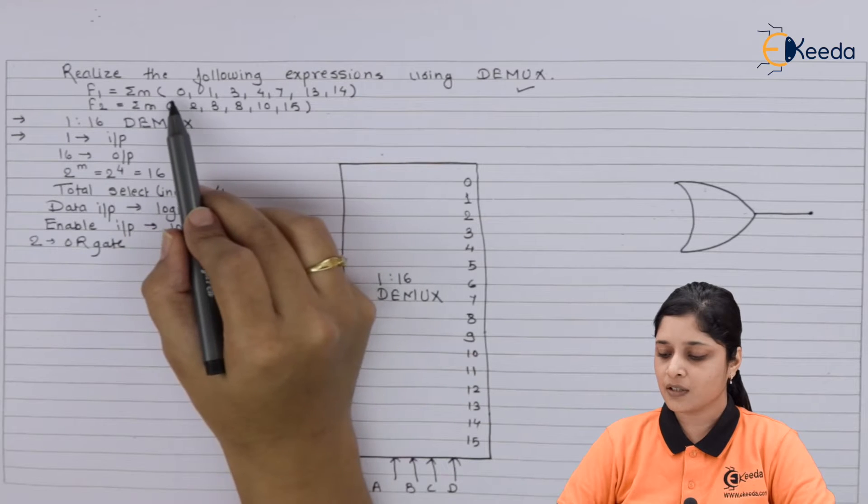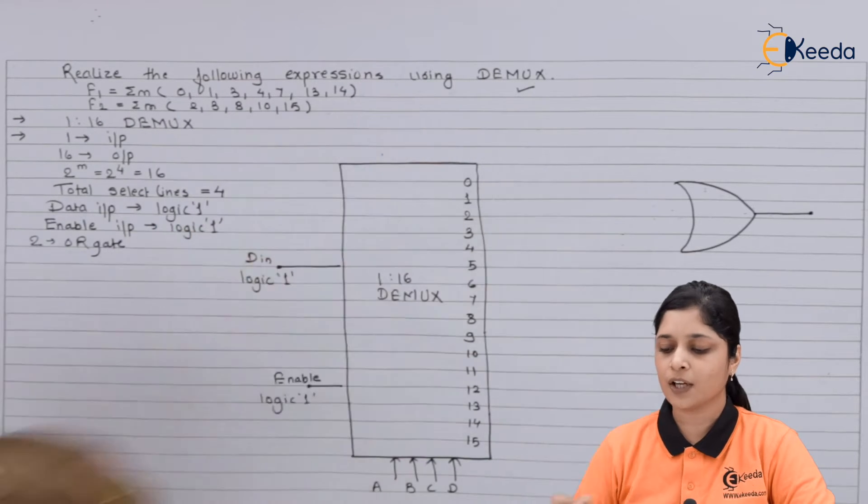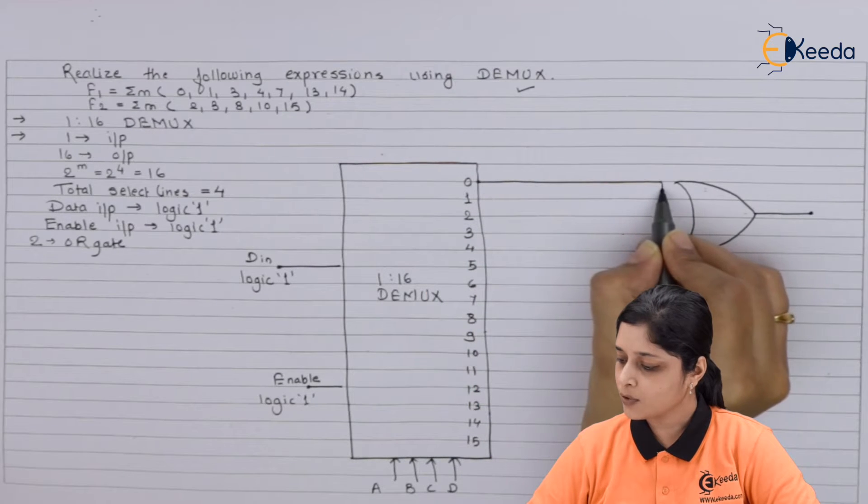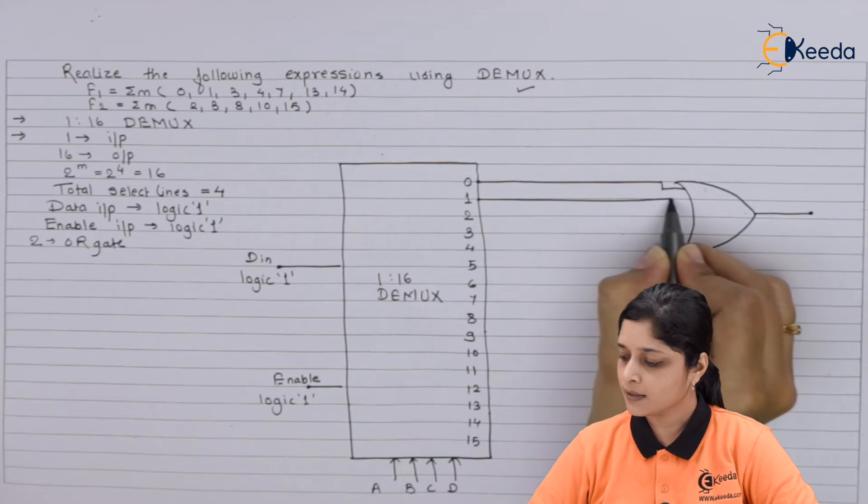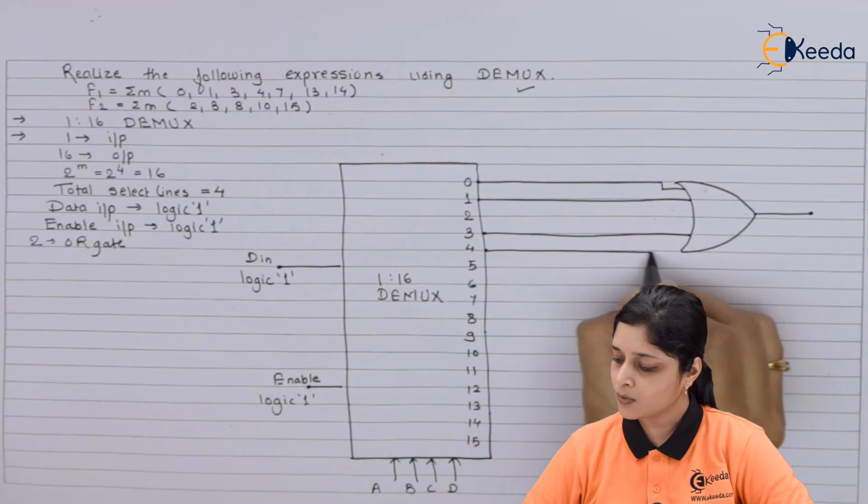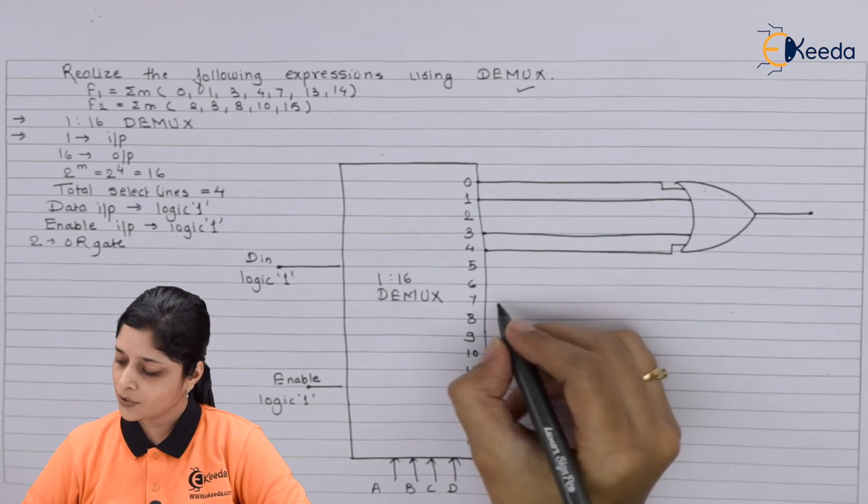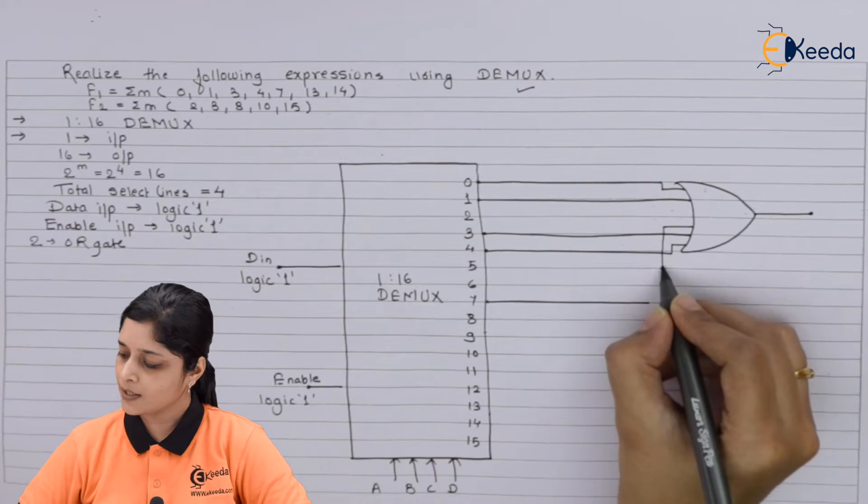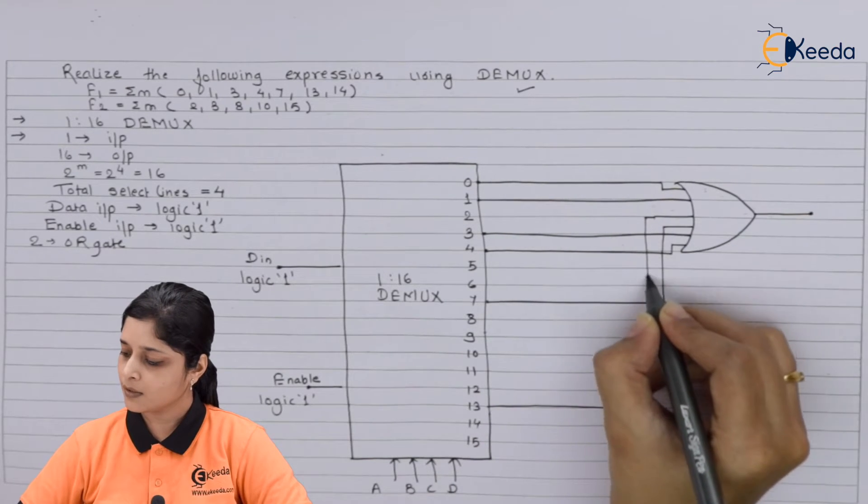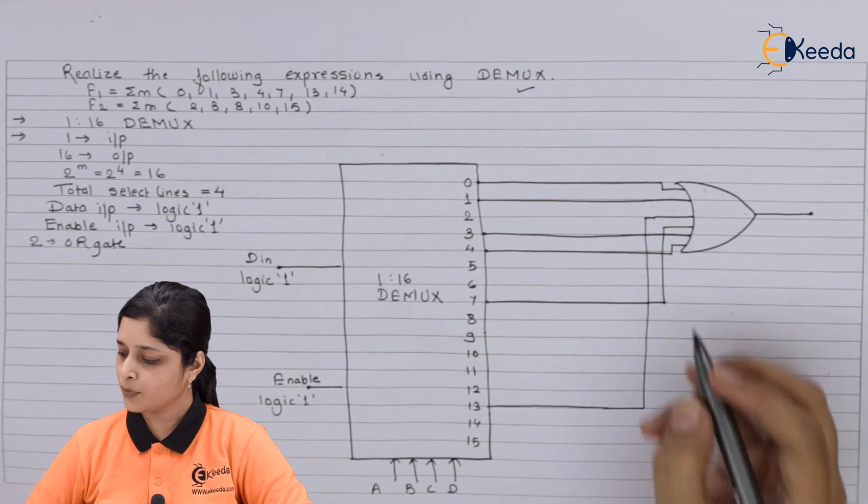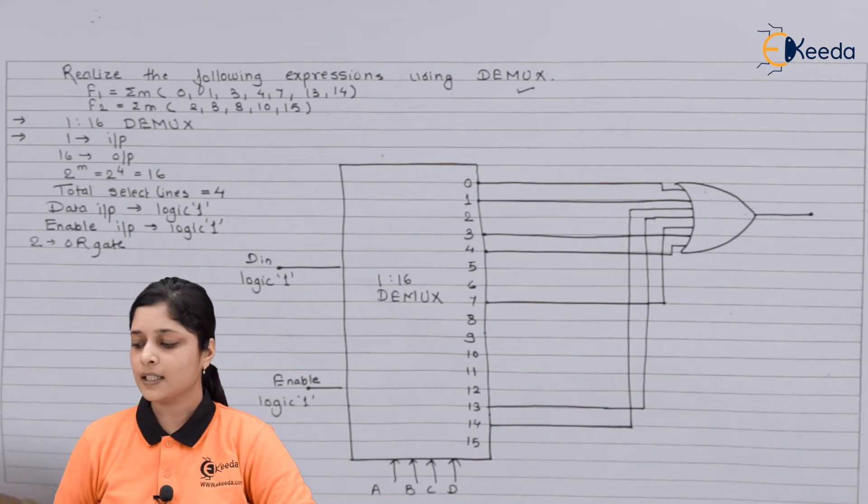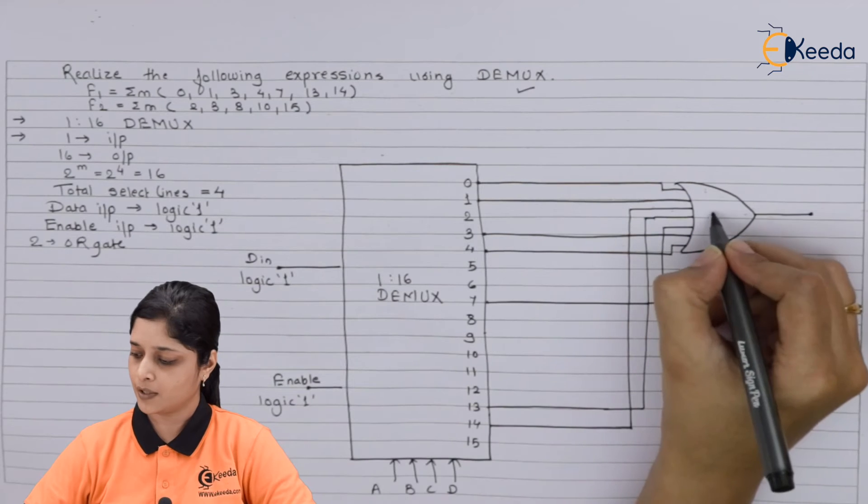If you see here, first expression consists of 0, 1, 3, 4, 7, 13, and 14, so we will connect one by one. Take zero line connect it to the OR gate, then take one line connect here, then three connect here, then take four outside and connect over here. After that you have seven, then take 13 and make connections like this, and 14 also. In this way first expression we have realized using OR gate. This is your final output f1.